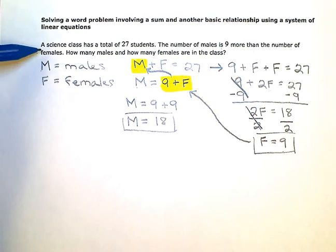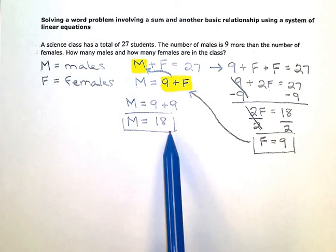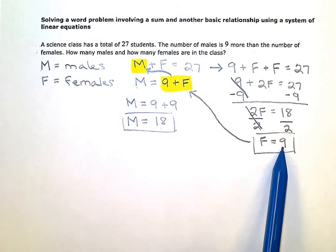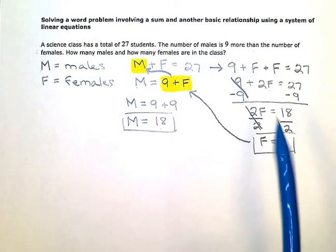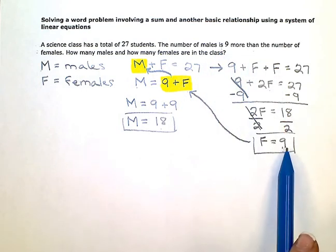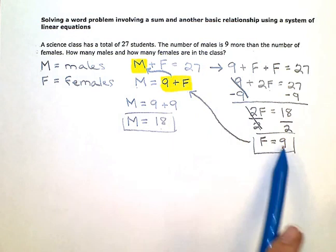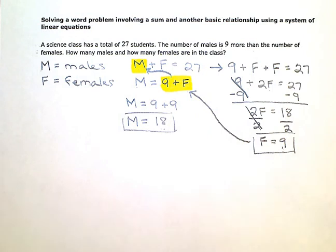Now if I go back to my original information and check, a science class has a total of 27 students. 18 boys plus nine girls does equal 27 students. And the number of males is nine more than the number of females. So if I have nine girls and add nine, that would give me 18 males.